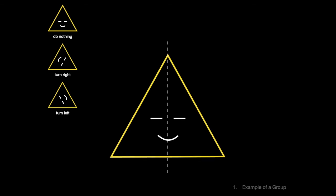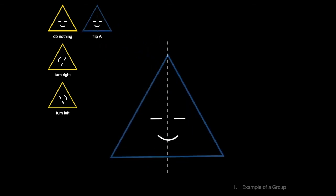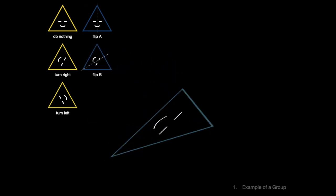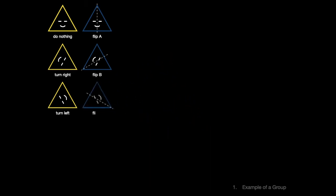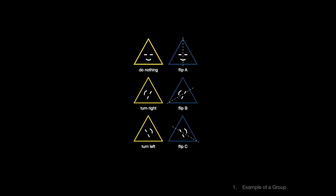Then there are three reflections. One over this line, we'll call it flip A. Over this line, we'll call it flip B. And over this line, we'll call it flip C. And that's it. These six actions together are an example of a group which is studied in the area of math called group theory.